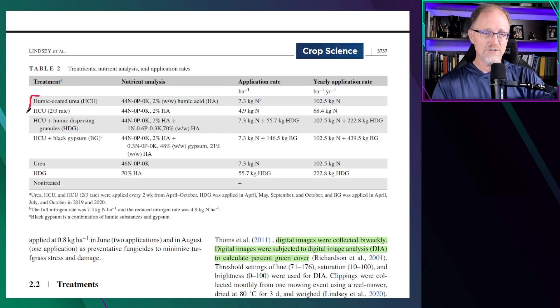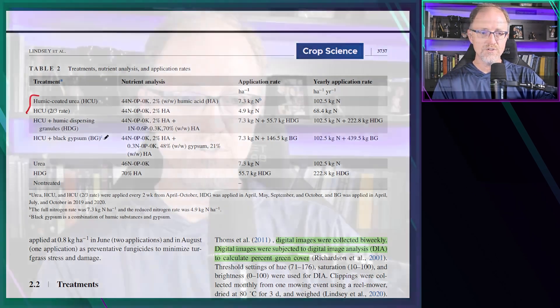They did a humic-coated urea at two-thirds the rate of nitrogen, the normal two-pound rate with humic-dispersable granules, humic-coated urea with black gypsum, straight urea, a humic-dispersable granule alone with no nitrogen, and non-treated turfgrass. So they have a number of different humic-coated ureas as well as urea applied at two pounds, and one product applied at two-thirds the rate of nitrogen.